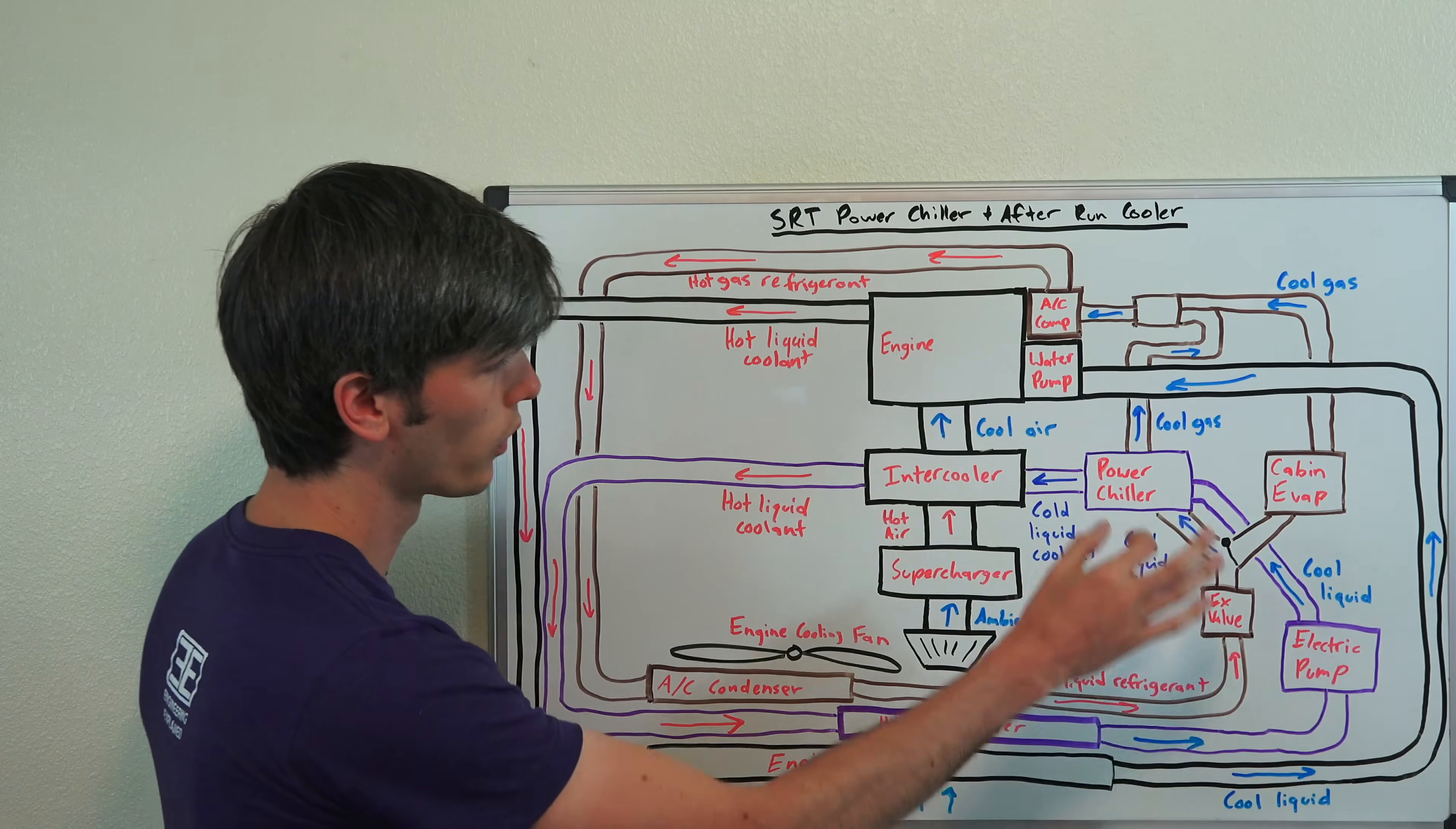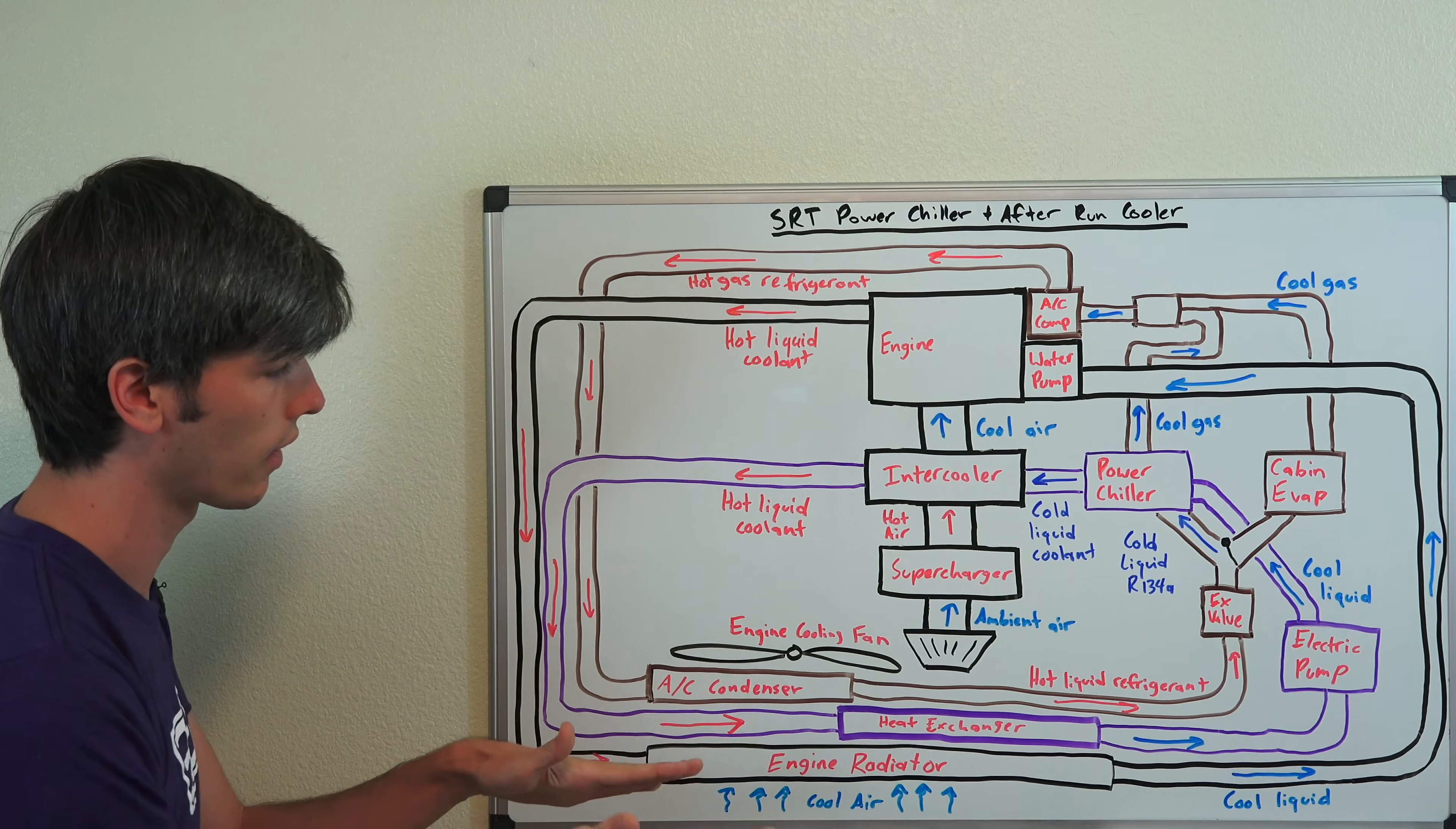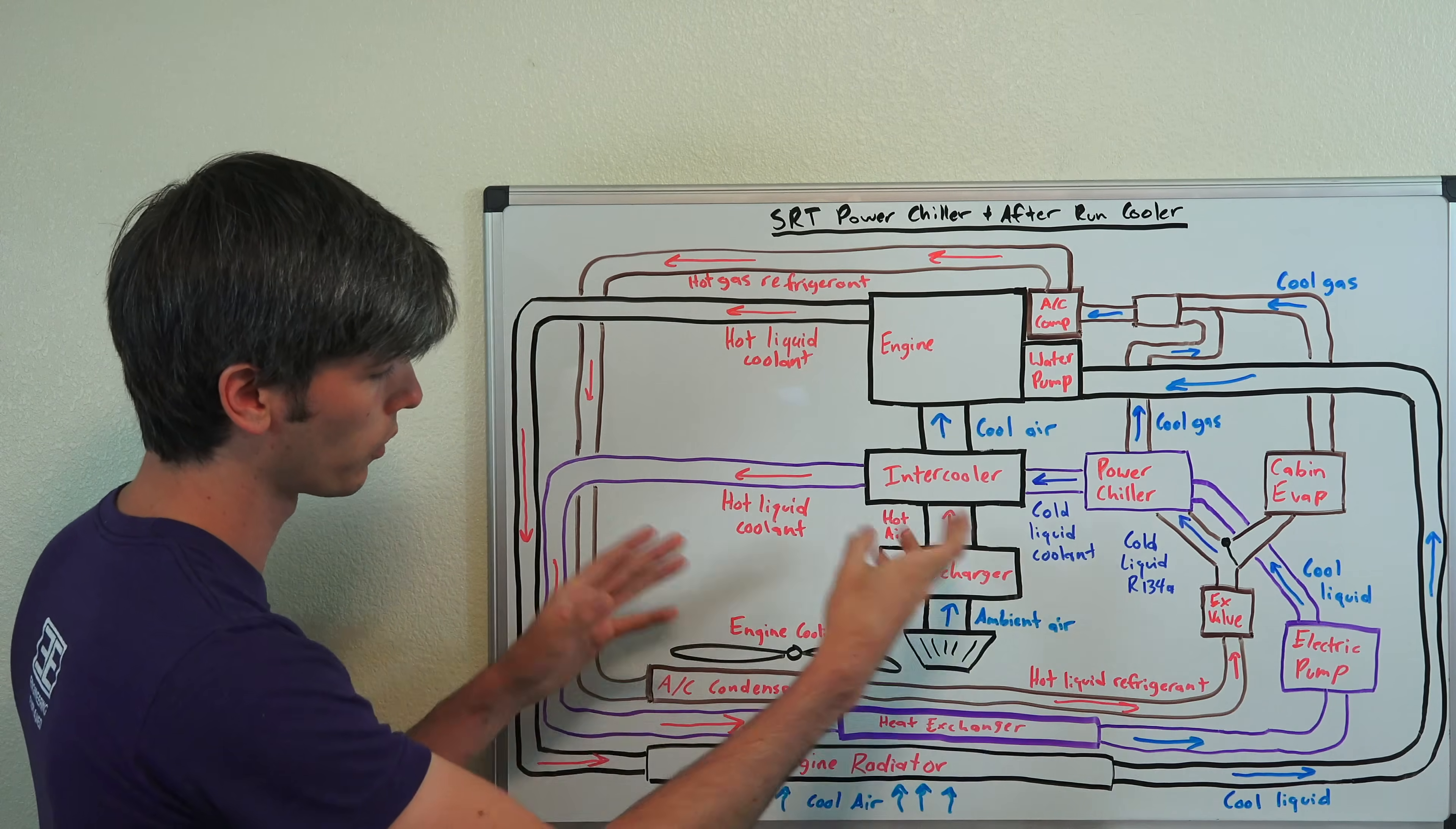It goes through an electric pump, through a power chiller and then into the intercooler. We'll get into the power chiller in a bit. Up front is where you have your stack of the radiator, the AC condenser, the heat exchanger for the intercooler. And you'll also have an engine cooling fan and this isn't exactly accurately drawn. It's going to be much more compact and the engine cooling fans will pull in air through the entire thing.